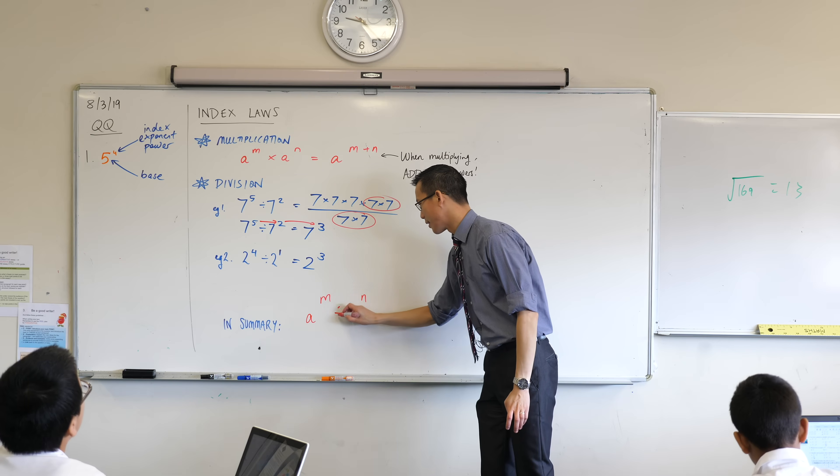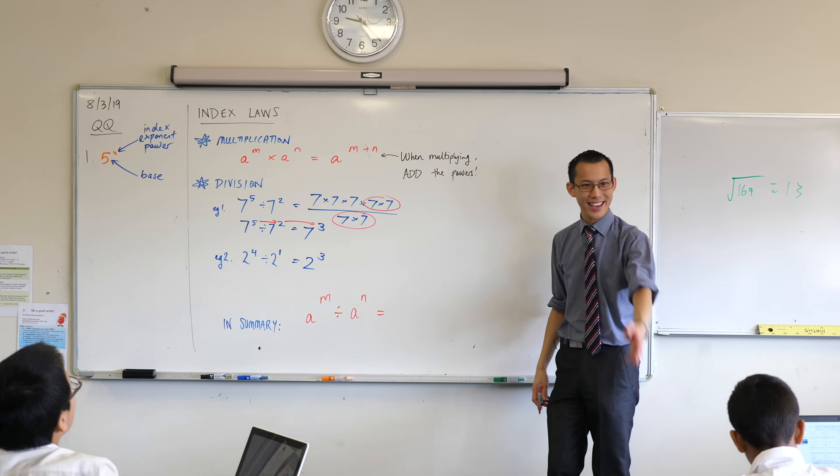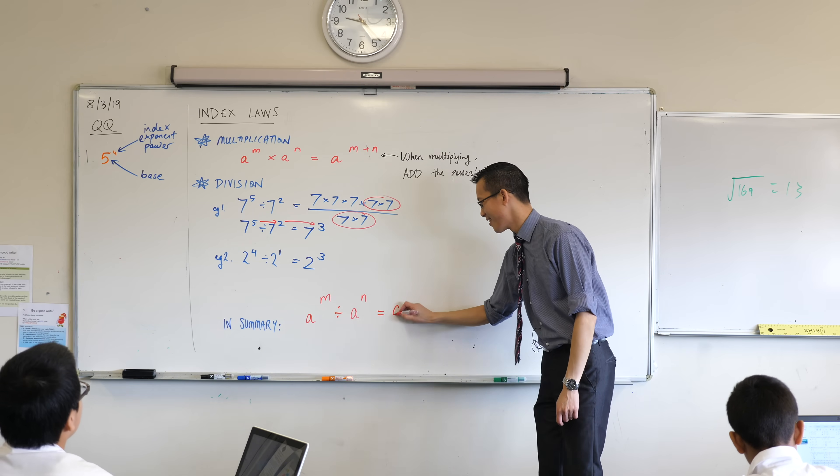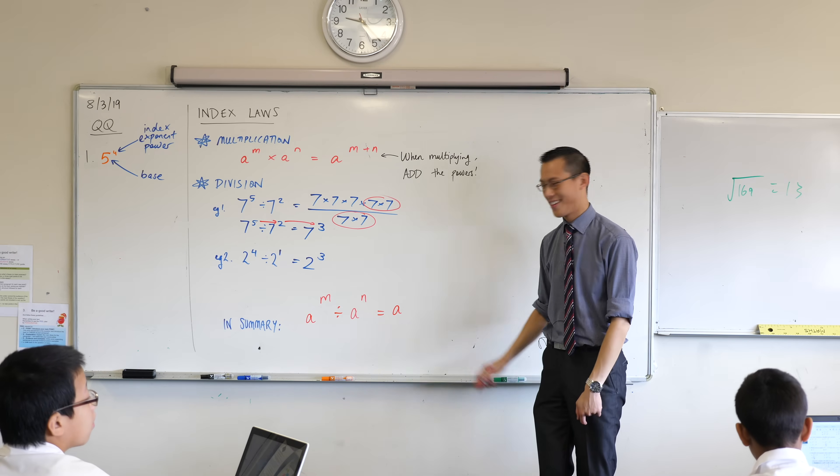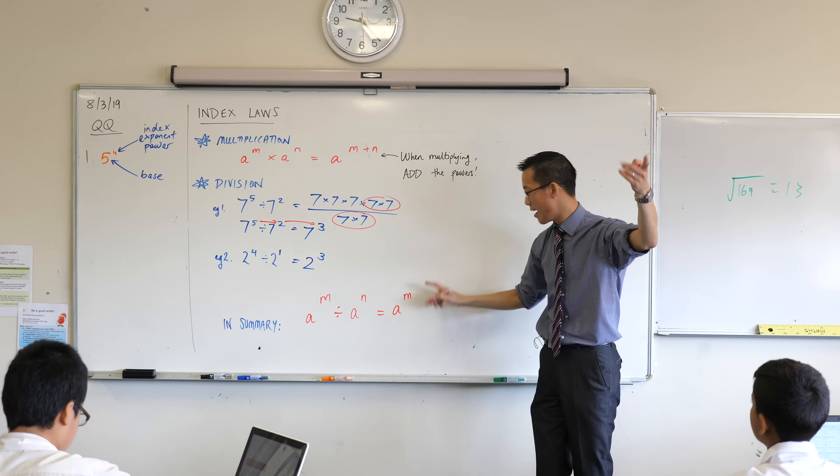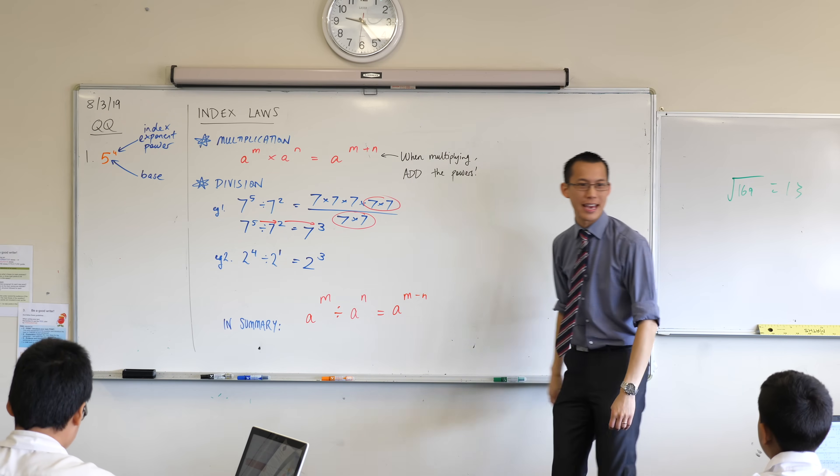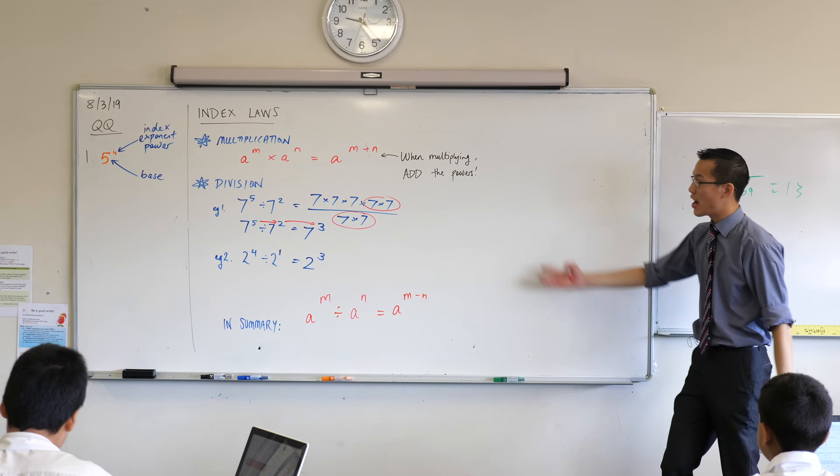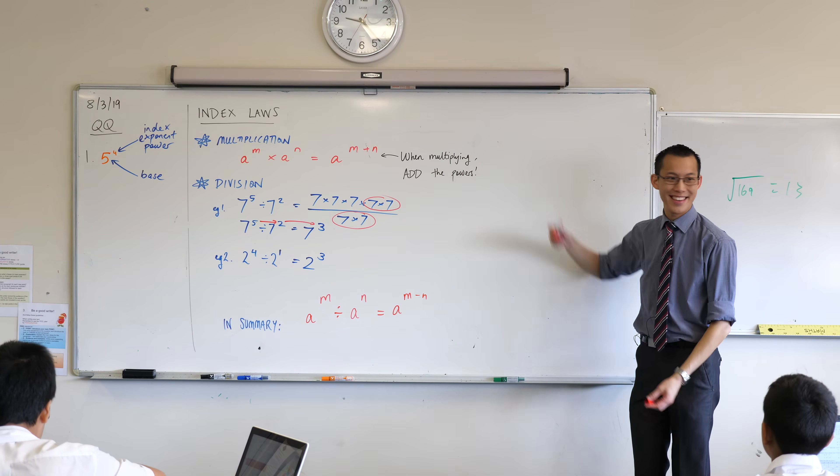how would you write this thing on the end? Louise? A to the power of m minus n. Take away n. That's it. So you know how he said before, when multiplying we add the powers?